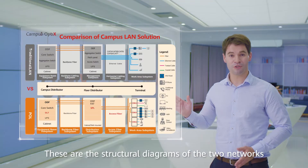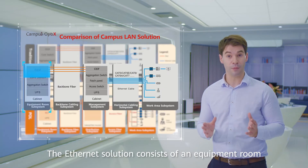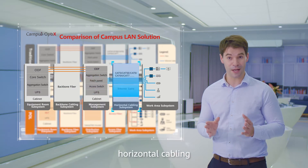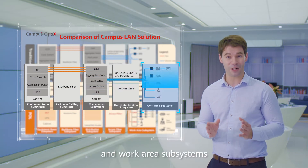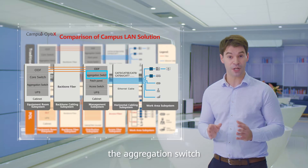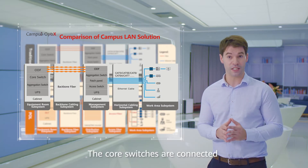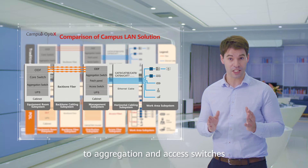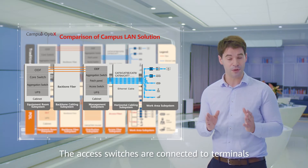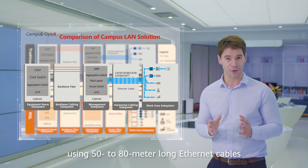These are the structural diagrams of the two networks. The Ethernet solution consists of an equipment room, backbone, management, horizontal cabling, and work area subsystems. The main devices are core switches, the aggregation switch, and access switches. The core switches are connected to aggregation and access switches using optical fibers. The access switches are connected to terminals using 50 to 80 meter long Ethernet cables.